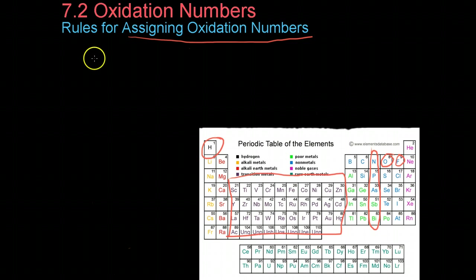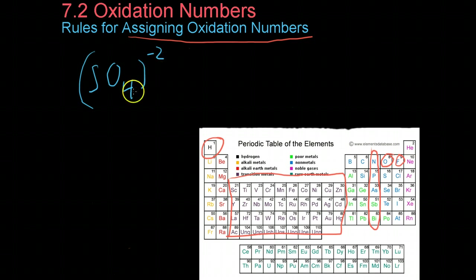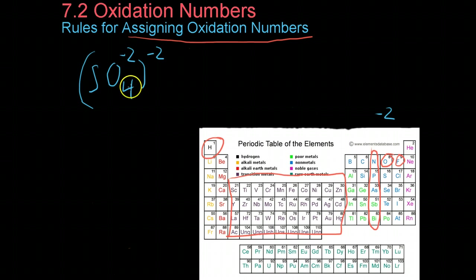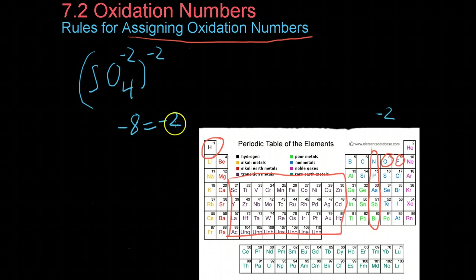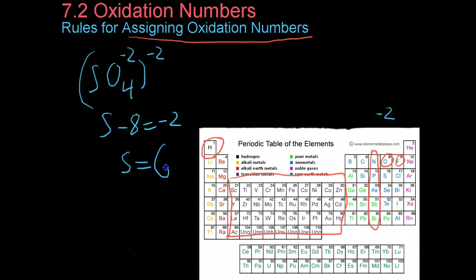Similarly, you can determine the oxidation number on individual atoms in a polyatomic ion, like sulfate, based on its total charge of -2. Oxygen, being more electronegative, has its oxidation number of -2. The four oxygen atoms give a total oxidation contribution of 4 × (-2) = -8. Since the whole polyatomic ion must total -2, we set sulfur + (-8) = -2, and with a little algebra, we find that sulfur has an oxidation state of +6 in this polyatomic ion.